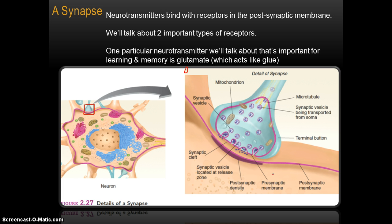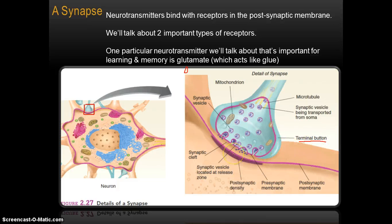The electrical part of that process is the action potential. The chemical part is what we're focusing on here now. When the action potential reaches the end of the axon, it causes the release of neurotransmitters. Neurotransmitters are the chemical part of this two-step electrical-chemical process — these little chemical messengers, little chemical molecules.